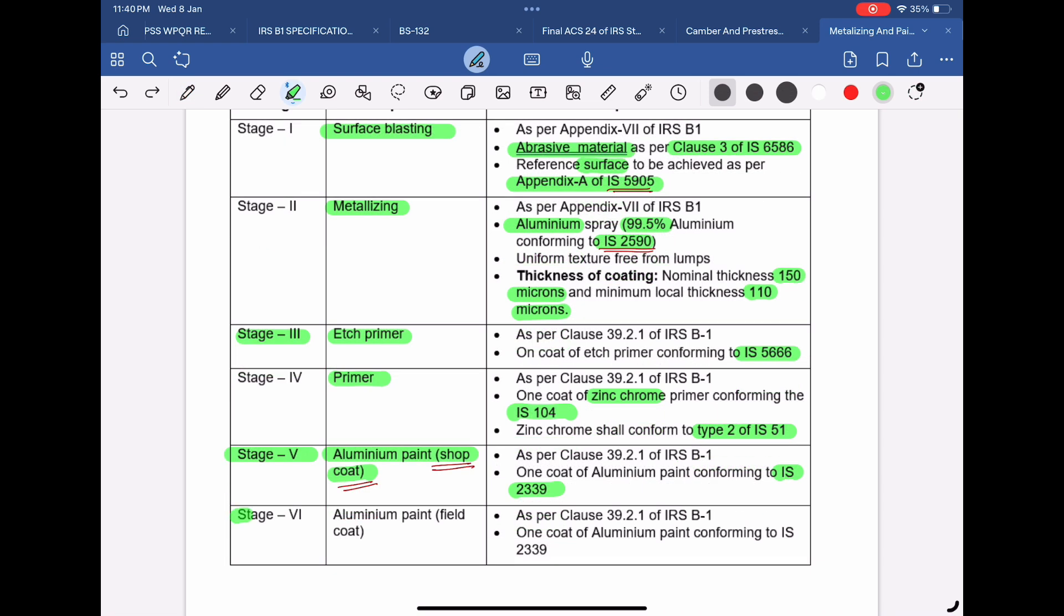In the last stage, that is in Stage 6, the final coat of aluminum paint conforming to IS 2339 shall be applied after completion of erection at site. This coat should be applied after touching up the damages to earlier coats occurred during transit and during erection operations.